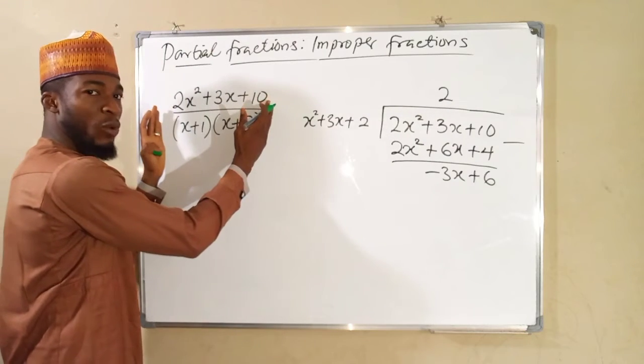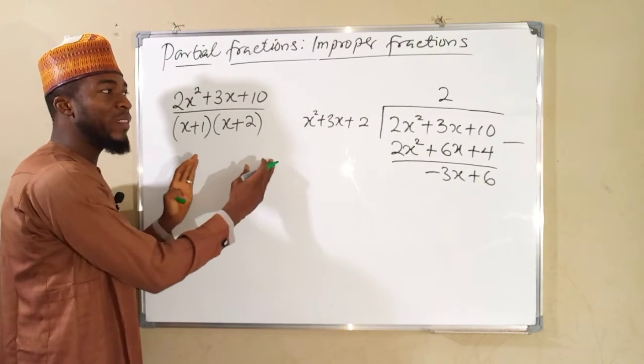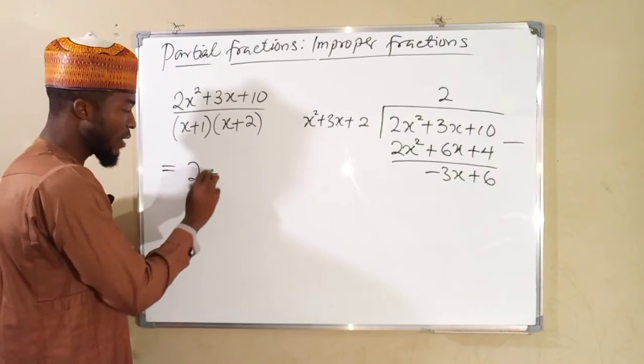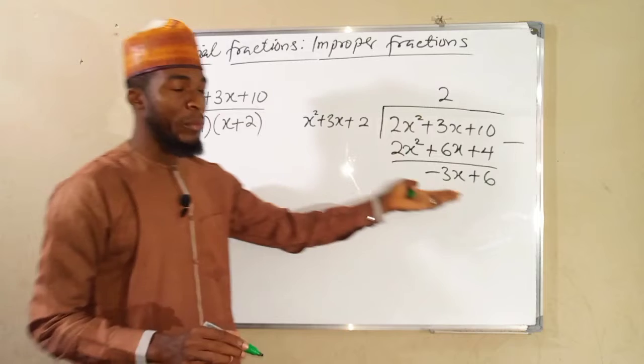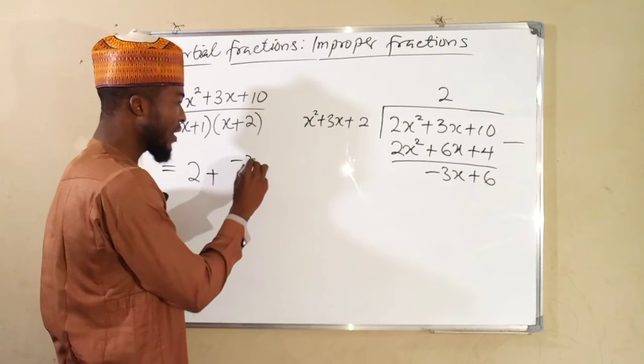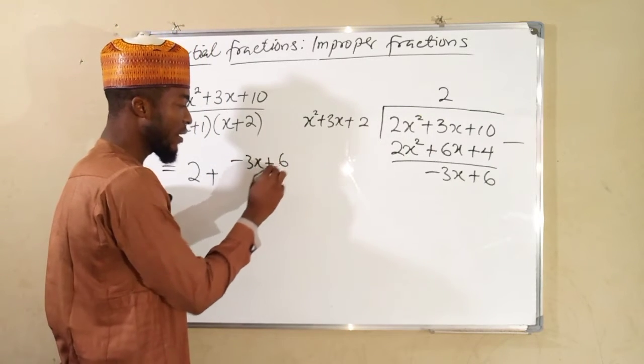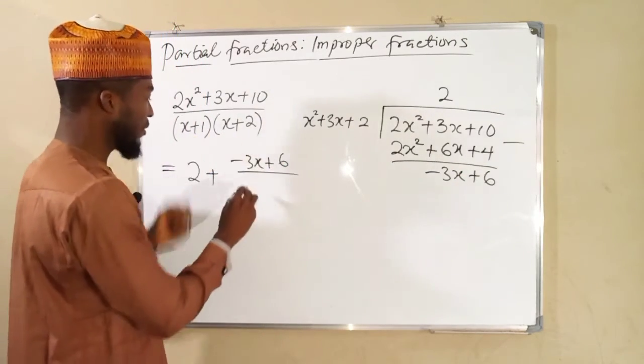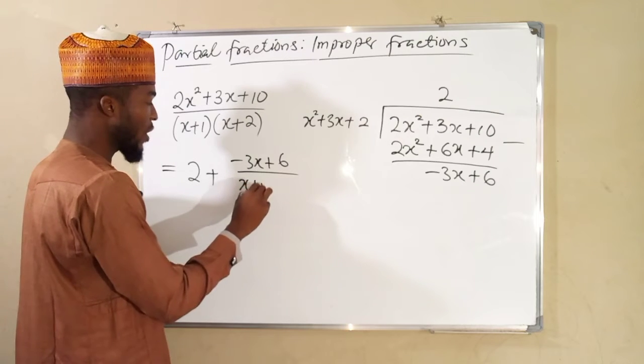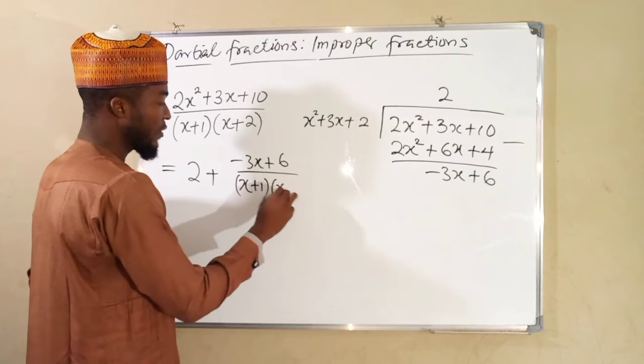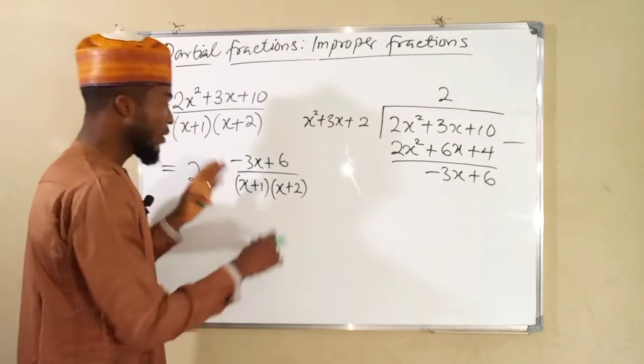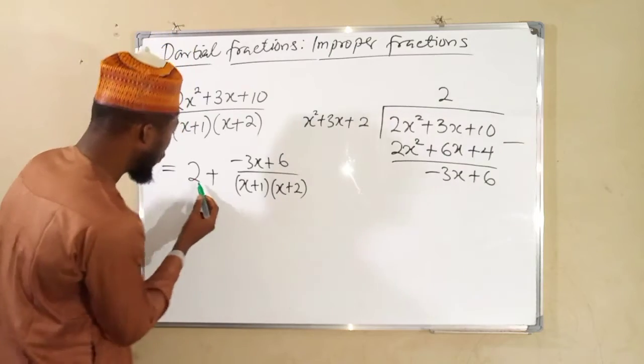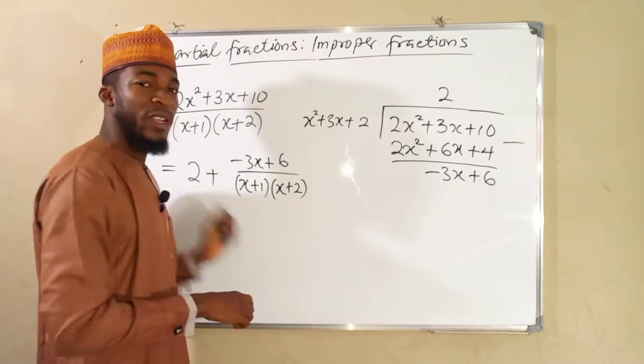So this compound fraction is going to be in the form of our quotient, which is 2, then plus the remainder, which is negative 3x plus 6, then divided by our divisor, which is these two factors, x plus 1, x plus 2. So this is what we have to split into partial fractions. And we add the result with these two. So let's do that.